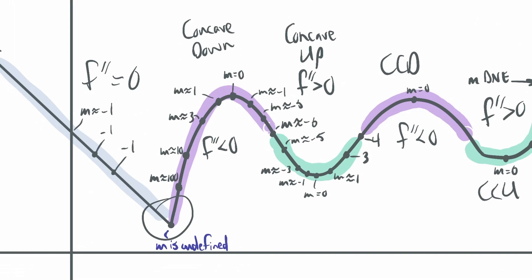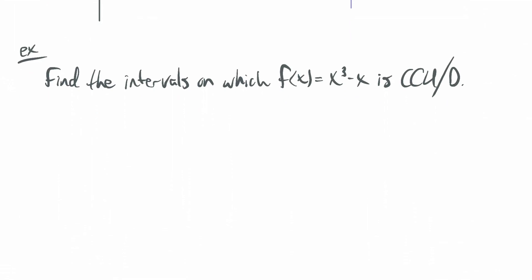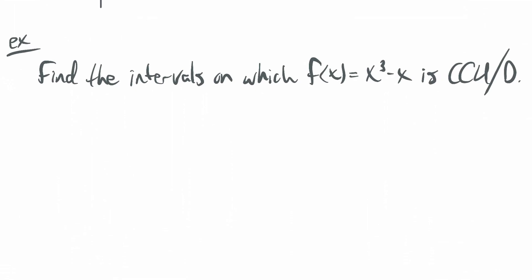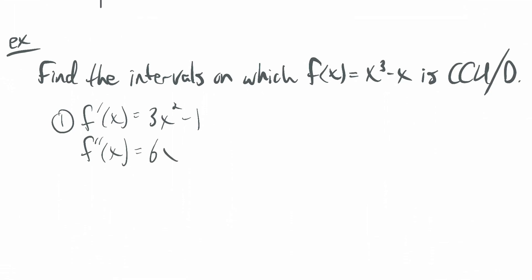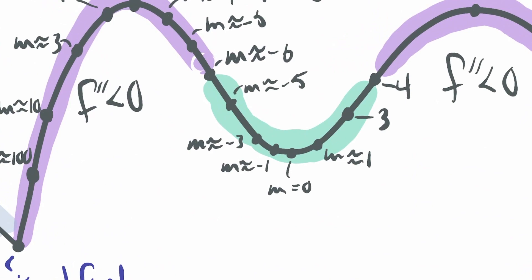The point where concavity switches is called an inflection point, or point of inflection. There are several inflection points on this graph — where concavity switches from concave down to concave up or vice versa. A corner where one side is flat (second derivative zero) and the other is concave down does not technically count as an inflection point, because the concavity does not switch from one type to the other.